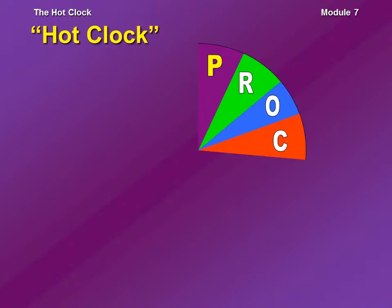At the top of the hour for this hot clock, I have a category P song. The P is for power. A power category has many different definitions, but for this particular hot clock, the power category is actually a current, but it is the most popular of the current songs. A current category might be the top 20, maybe the top 40 songs.